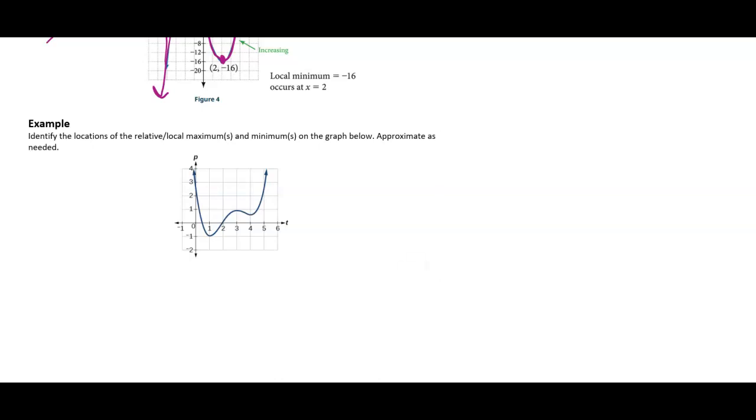So I notice that my function changes from decreasing to increasing here at the point (1, negative 1). Therefore, I would say that there is a local min of negative 1 at x equals 1.